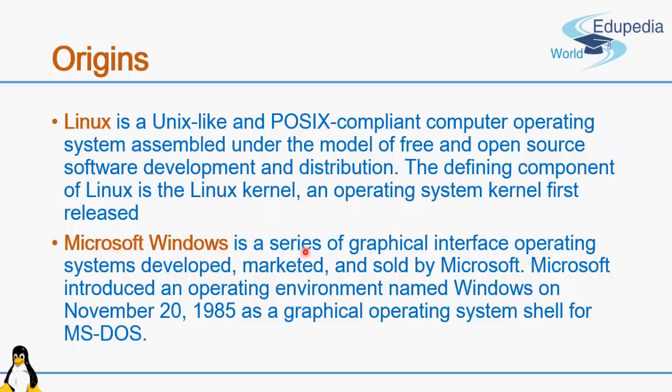Microsoft Windows is a series of graphical interface operating systems developed, marketed, and sold by Microsoft. Initially, early versions of Windows were not standalone operating systems but system software running on top of Microsoft DOS. DOS would boot first, and then when you issued commands like Win or Init, Windows would come up. These were the initial versions of Windows, and one very popular version was Windows 3.1. Then came Windows 95, which marked the beginning of standalone Windows operating systems.